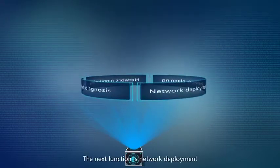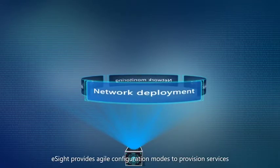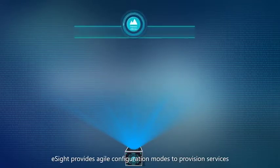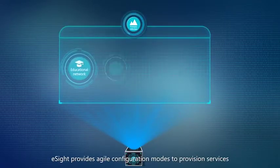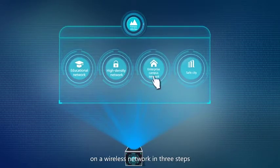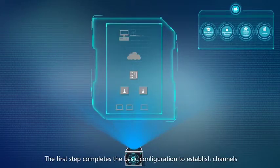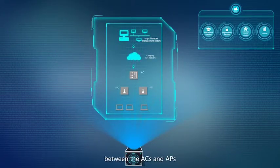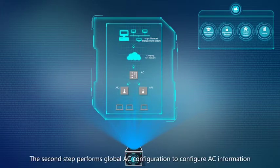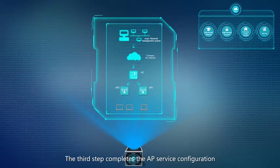The next function is network deployment. E-Site provides agile configuration modes to provision services on a wireless network in three steps. The first step completes the basic configuration to establish channels between the ACs and APs. The second step performs global AC configuration to configure AC information. The third step completes the AP service configuration.